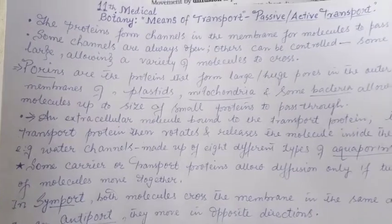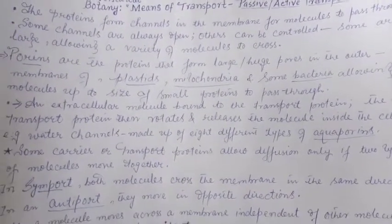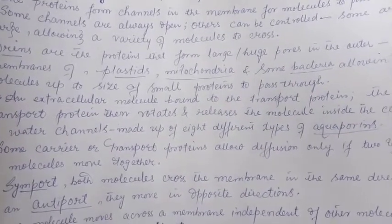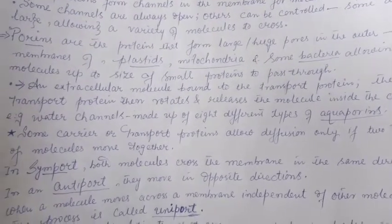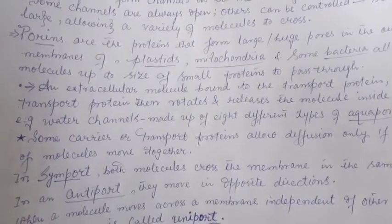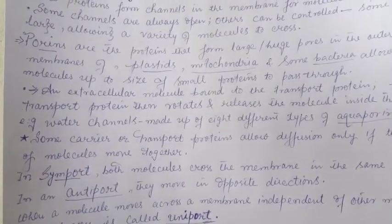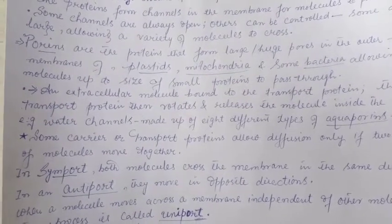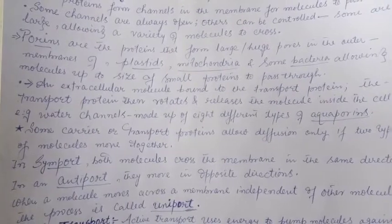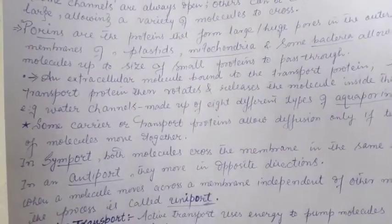Porins are proteins that form large pores in the outer membranes of plastids, mitochondria, and some bacteria. This means sub-cellular organelles like chloroplasts and mitochondria have proteins in their membranes forming huge pores, allowing molecules up to the size of small proteins to pass through.